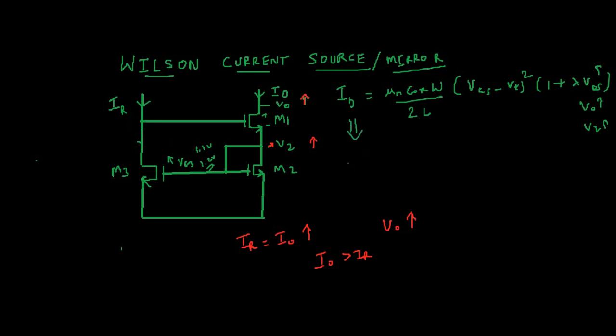Let me write it here: IR is equal to mu_n C_ox W by 2L times V_GS3 minus V_T whole square times 1 plus lambda V_D3. Now since IR is constant, it remains at say 1 milliampere all the time. Since V_GS3 increases, in order for IR to remain same, the drain voltage has to decrease. So V_D3 in turn decreases so that the current remains constant.